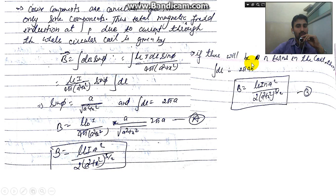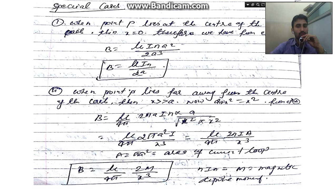If there are n number of turns in the coil, the only change is that dl becomes 2πan instead of 2πa. Therefore the magnetic flux density becomes B = μ₀·I·n·a² / (2(a² + X²)^(3/2)).